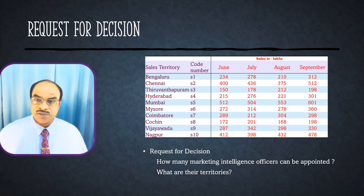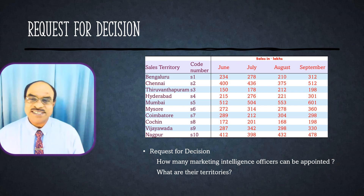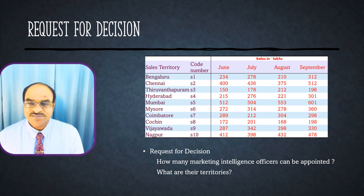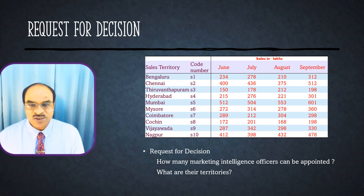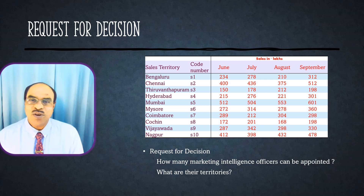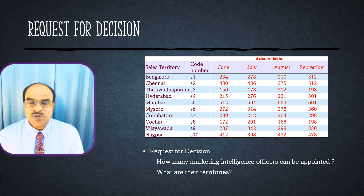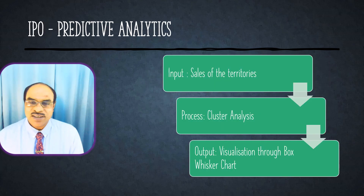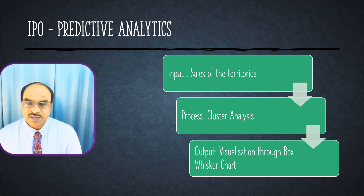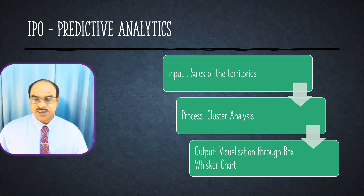On which basis are you going to fix the territories? This is called a Request for Decision, usually called RFD. This type of problem comes from the Chief Marketing Officer. You, playing the role of marketing analytics person or marketing intelligence team, must be able to clearly say how many marketing intelligence teams can be appointed and what are all the sales territories. This comes under predictive analytics.